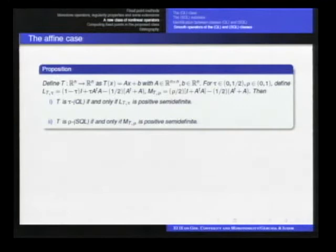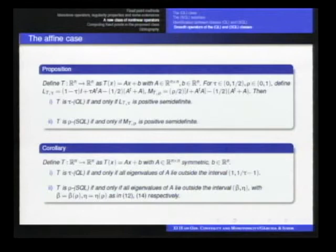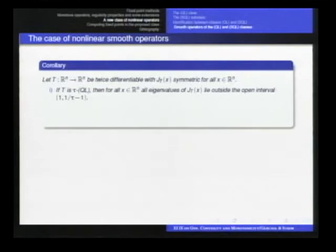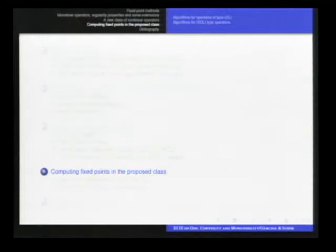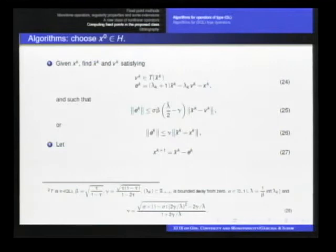Well, if you define this matrix L here, or this matrix M here, then the operator T is an element of the QL class if and only if the matrix L is positive semi-definite. This is the case when T is an affine mapping given by this matrix A. And T is an element of the symmetric part of the class if and only if the matrix M is positive semi-definite. Of course, it can be given in terms of eigenvalues. So, the same, the nonsmooth case can also be identified using the matrix with a defined with a Jacobian matrix and so on.